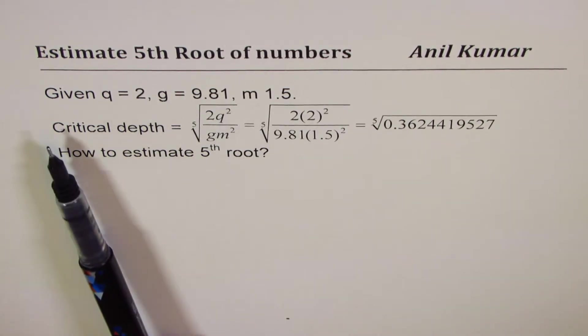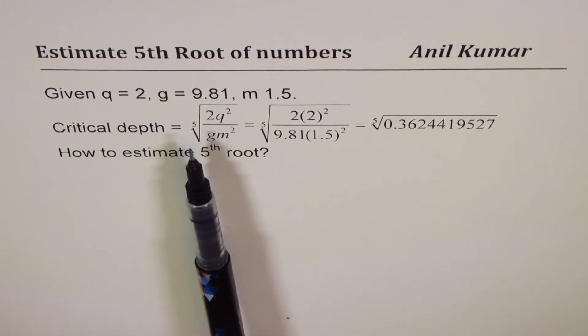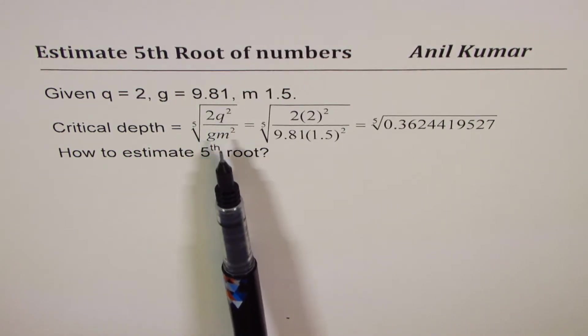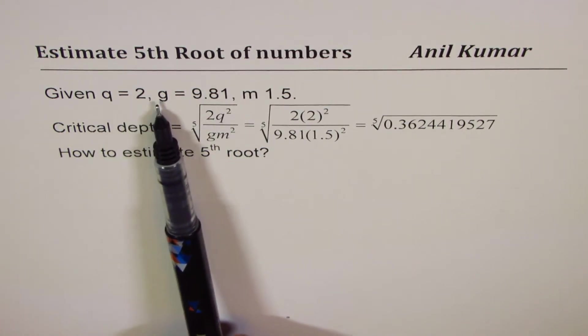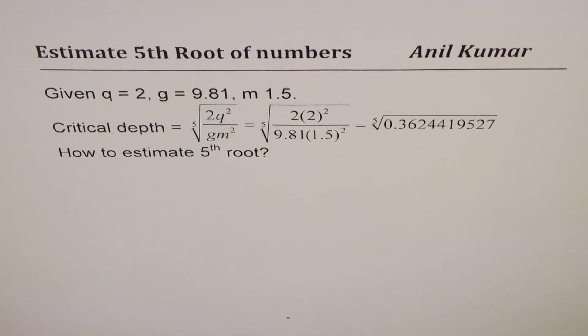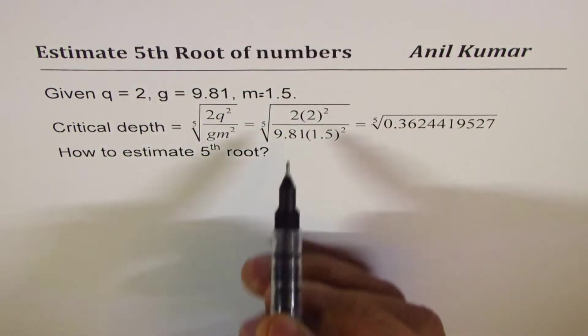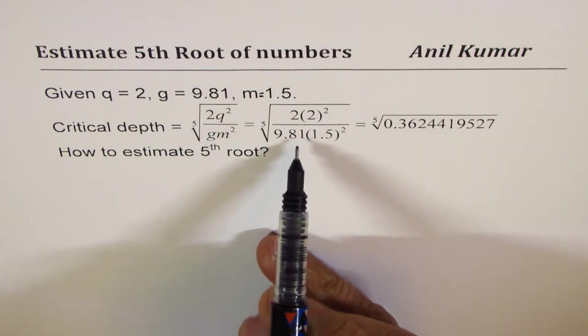Now you calculate critical depth using the formula fifth root of 2q² over gm², and for one of the examples you have value q=2, g=9.81, and m=1.5. If you substitute all these values, you get something like this.